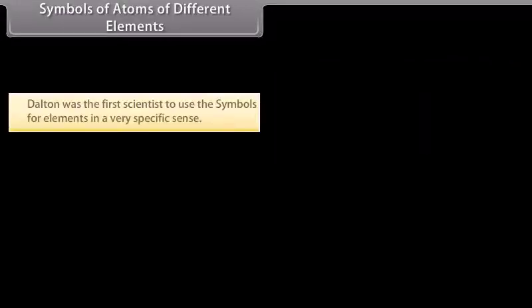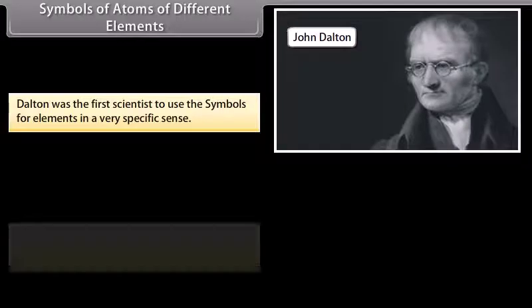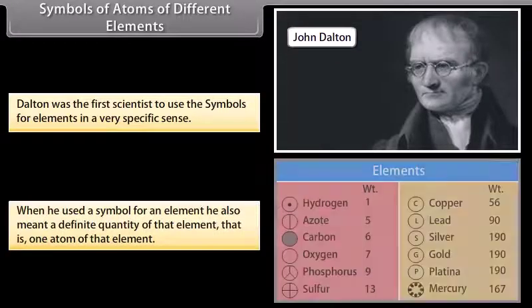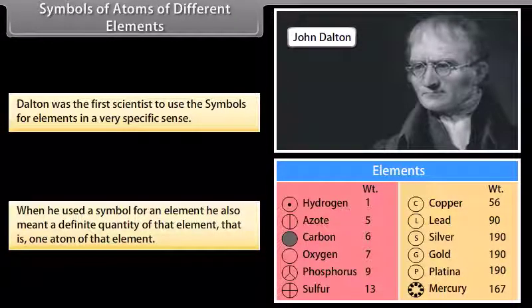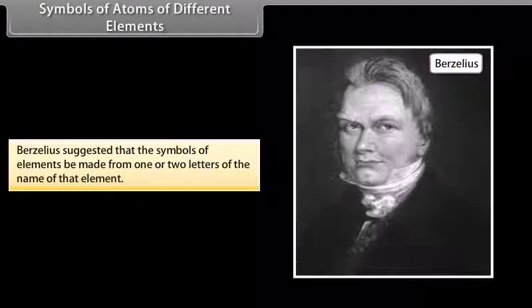Dalton was the first scientist to use the symbols for elements in a very specific sense. When he used a symbol for an element, he also meant a definite quantity of that element, that is, one atom of that element. Berzelius suggested that the symbols of elements be made from one or two letters of the name of that element.